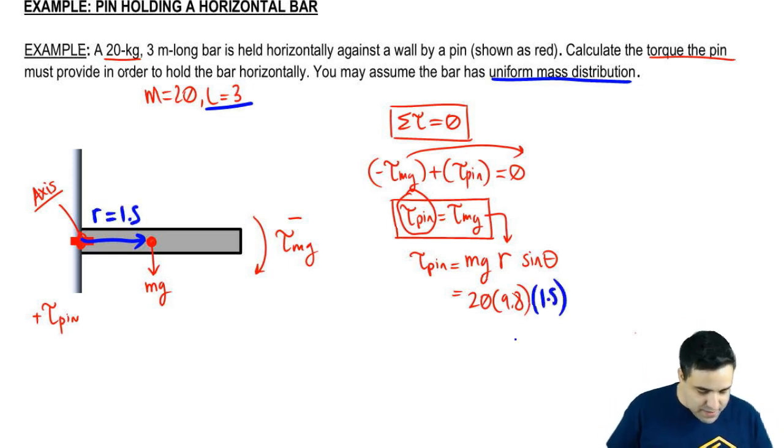Put a 1.5 here. And the angle that these two guys make is 90 degrees. So sine of 90 is 1.